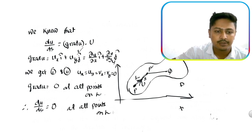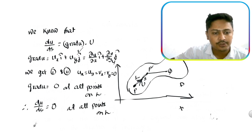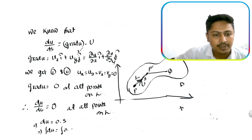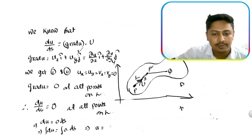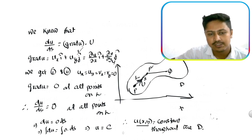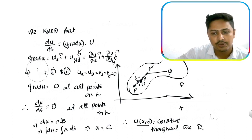Therefore, by using this result, du/ds equal to zero at all points on L. So making a conclusion: integrating, du equal to zero times ds, so du equal to zero. Integrating, u equal to constant — say constant C. Therefore u(x, y) is constant throughout the domain D. So our first part is that u(x, y) is constant. That is complete.